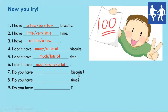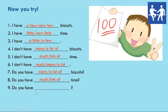And now a question: 'Do you have ___ biscuits?' — 'Do you have many or a lot of biscuits?' 'Do you have ___ time?' — 'Do you have much or lots of time?' Again, 'many' or 'a lot of' for a countable noun like biscuits; 'much' or 'lots of' for an uncountable noun like time. And where we have no noun in a question: 'Do you have much or many?' — depending on whether it was a countable or uncountable noun.